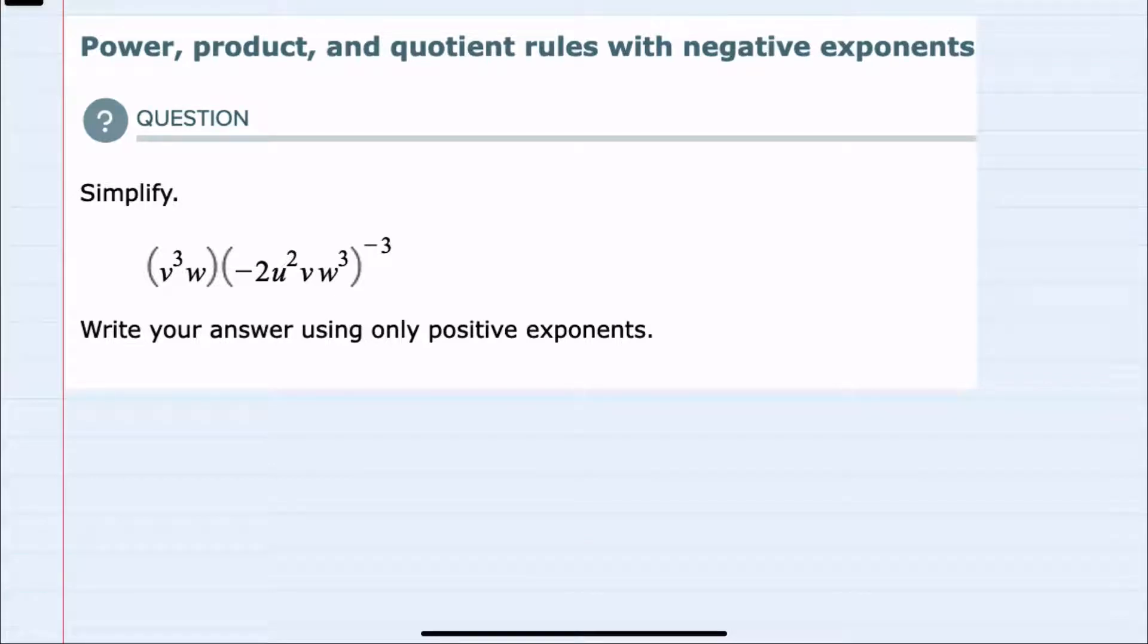In this video I'll be helping you with the Alex problem type called power, product, and quotient rules with negative exponents. We're asked to simplify here and to write our answer with only positive exponents. And I'll start by noticing that we have two parentheses here being multiplied, and the second one has a negative exponent.